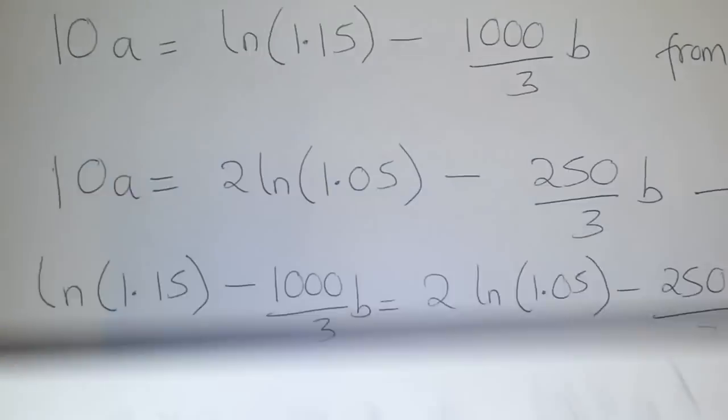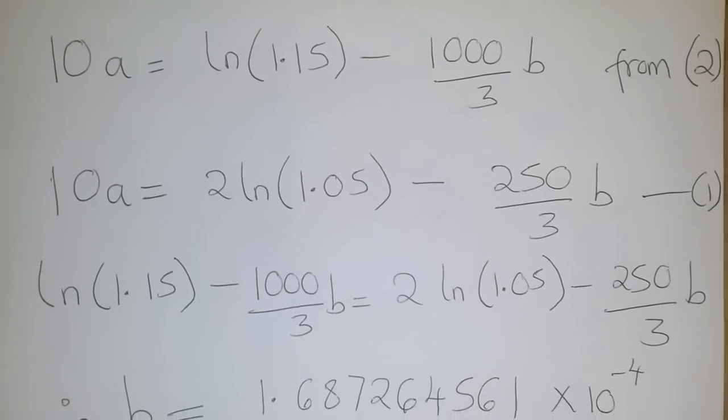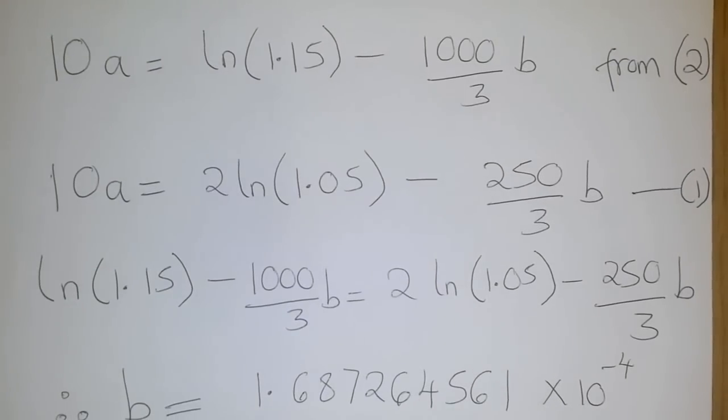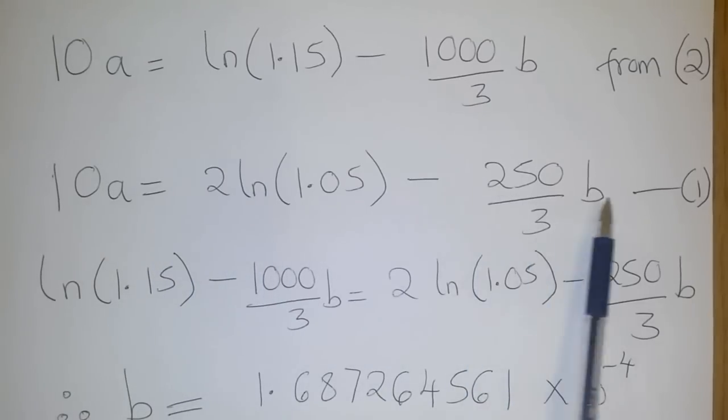Now, we can use these two equations to simultaneously solve for a and b. And from equation 2, we work out that 10a is equal to the natural log of 1.15 minus 1000 over 3 b. Well, from equation 1, we get that 10a is given by this.